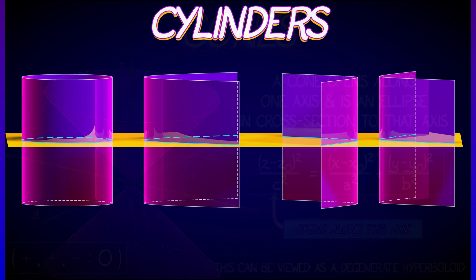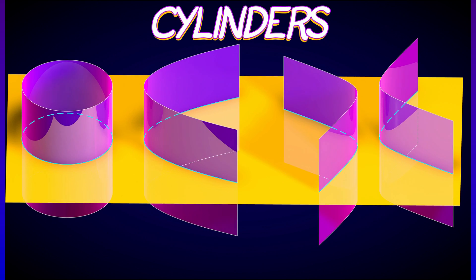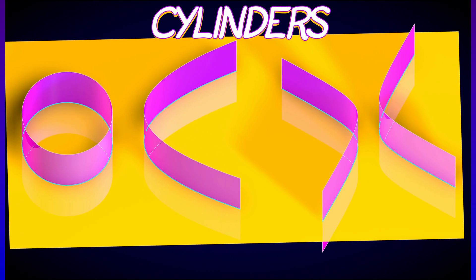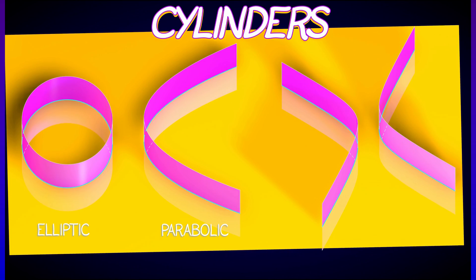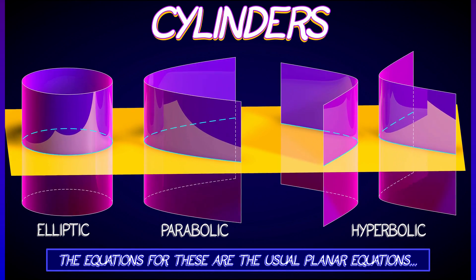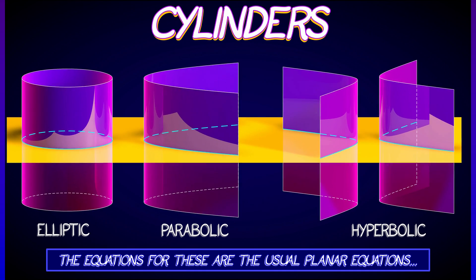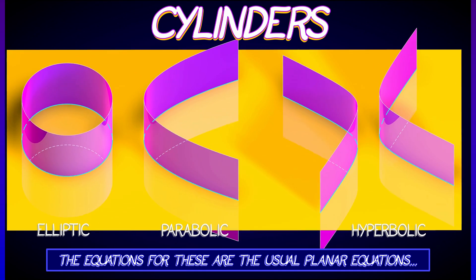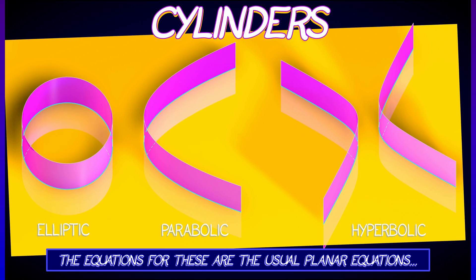Lastly, we have cylinders, which consist of planar curves, such as an ellipse or a parabola or a hyperbola, but which extend off in a third direction in an unbounded manner. And the equations for these are just the usual planar equations with the third variable left out.